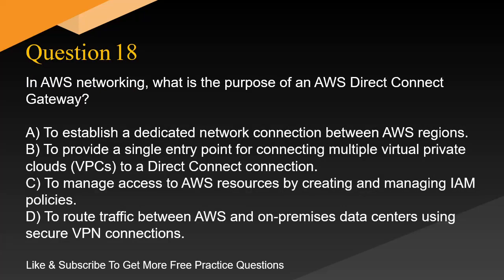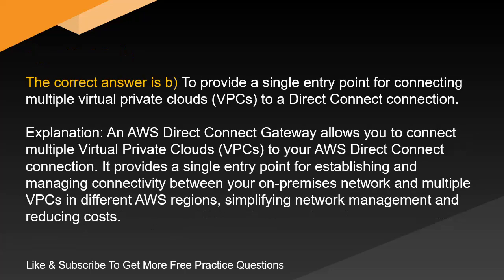Question 18. In AWS networking, what is the purpose of an AWS Direct Connect gateway? A. To establish a dedicated network connection between AWS regions. B. To provide a single entry point for connecting multiple virtual private clouds, VPCs, to a Direct Connect connection. C. To manage access to AWS resources by creating and managing IAM policies. D. To route traffic between AWS and on-premises data centers using secure VPN connections. The correct answer is B: To provide a single entry point for connecting multiple VPCs to a Direct Connect connection.